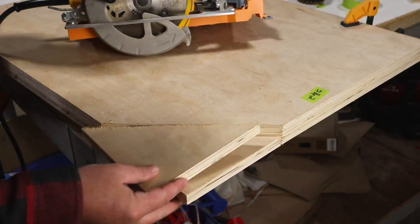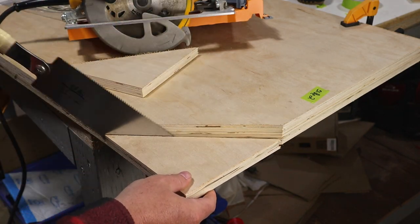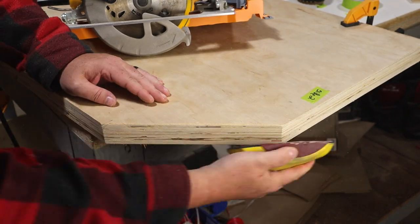I didn't set the saw deep enough though so I had to use the Japanese pull saw to finish off the cut. Then I sanded it all smooth while they're both still clamped together.